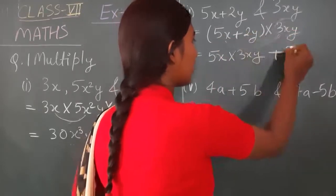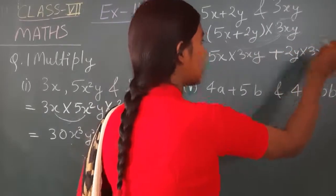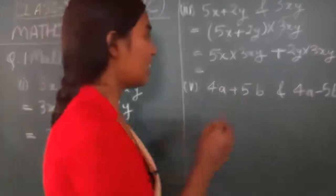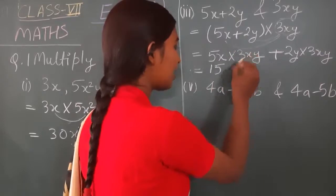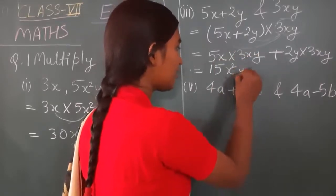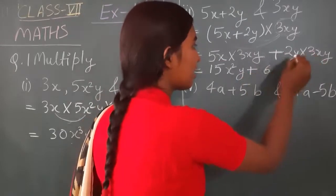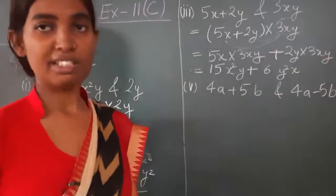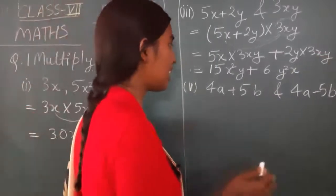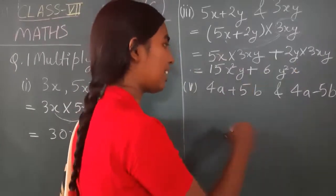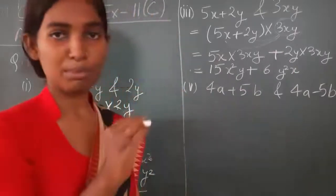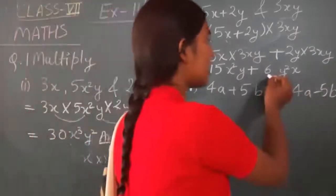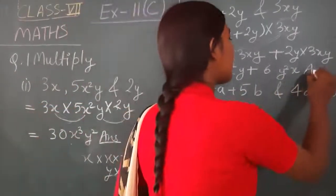First we write 5x into 3xy, then plus 2y into 3xy. Now solving: 5 multiplied by 3 is 15, x into x is x square, and y stays as it is — giving 15x²y. Then 2 into 3 is 6, y into y is y square, and x stays as it is — giving 6xy². Note: it doesn't matter whether you write x or y first; both orderings are correct.